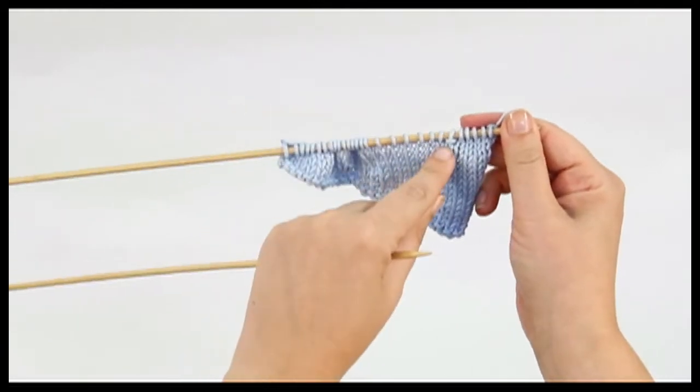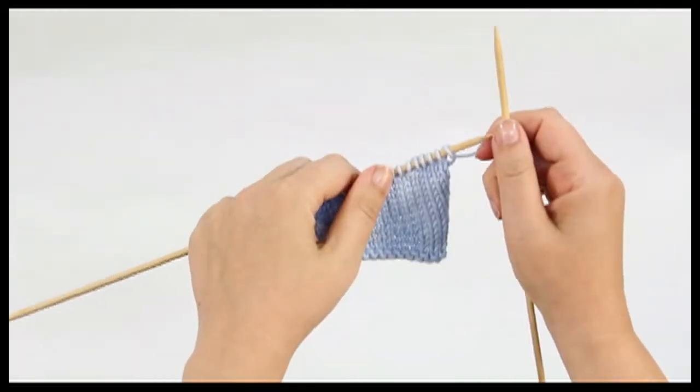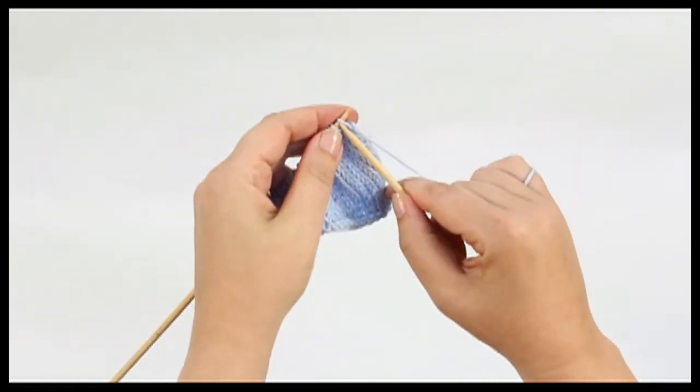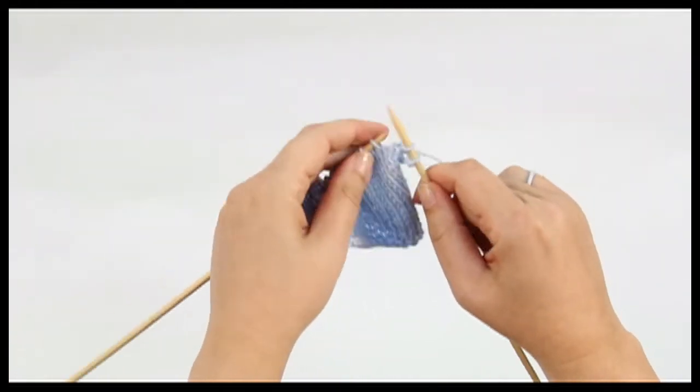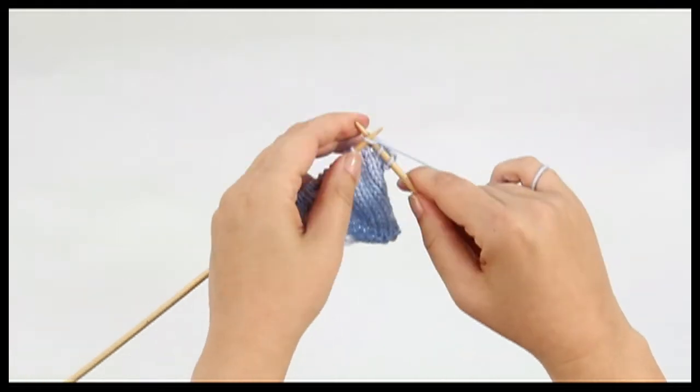You will see here that the wrapped stitch has a bar in front of it. Now I will show you how to make this disappear as you knit back across the row. Knit to the wrapped stitch.